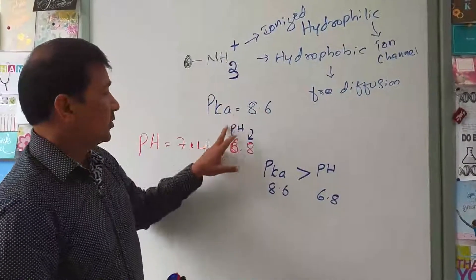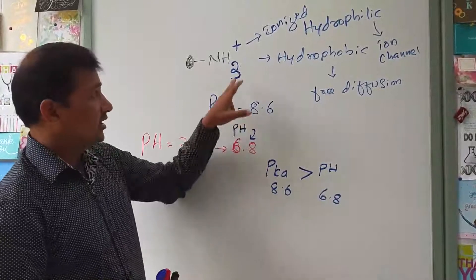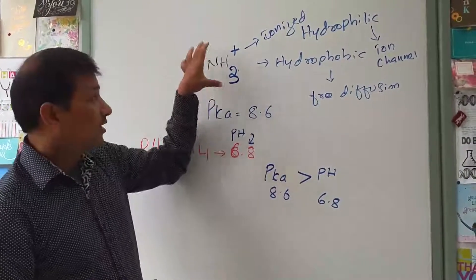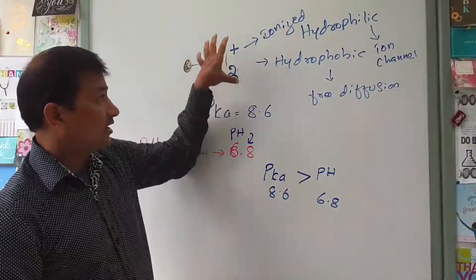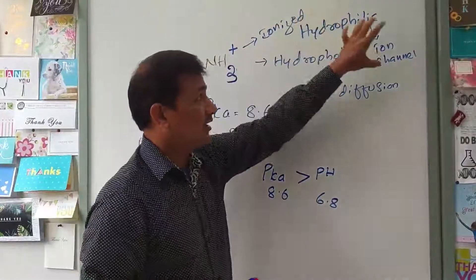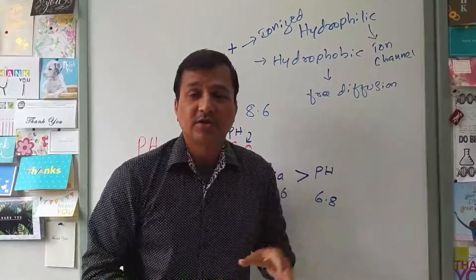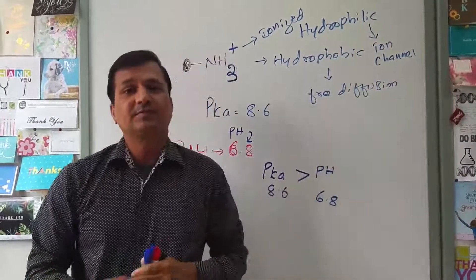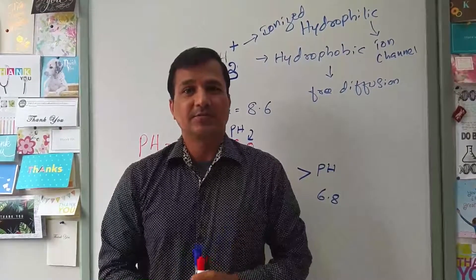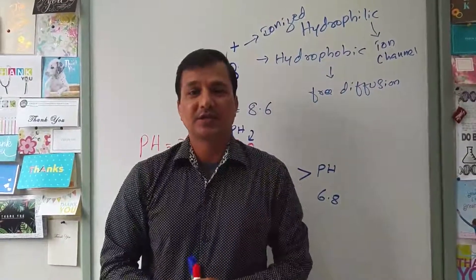In summary: at pH 6.8 with pKa 8.6, the drug undergoes protonation, becoming NH3+ in its ionized, hydrophilic form. It uses an ion channel to enter the cell, and within the ion channel it interacts with aspartyl and glutamyl residues. The correct answer is option C.